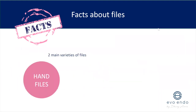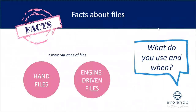The two main varieties of files are hand files and engine-driven files. For me, before you introduce engine-driven files you always have to use hand files first. Why? Hand files provide greater tactile feedback and allow you to judge the anatomy of the root canal system. You can feel if there's any resistance due to mineralization, sclerosis within the canals, or resistance caused by acute curvatures that you would have evaluated using your preoperative x-rays.